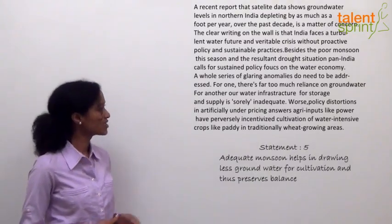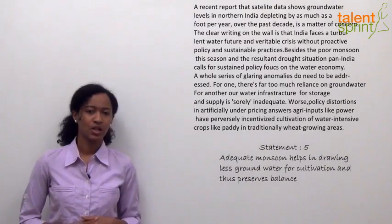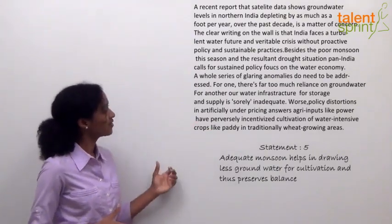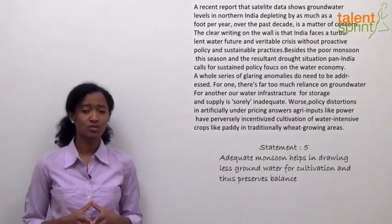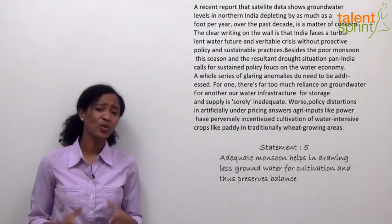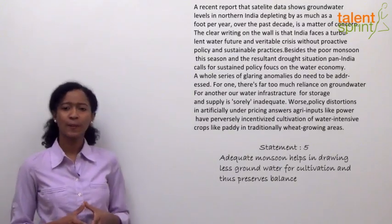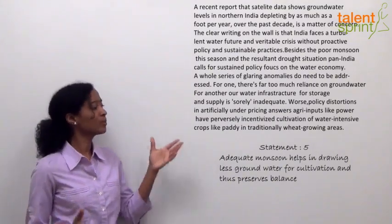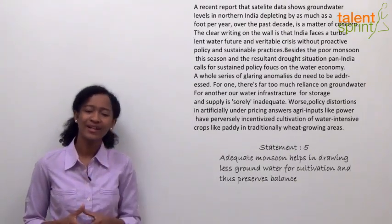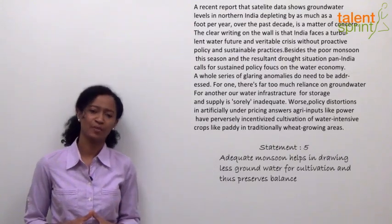Statement 5: 'Adequate monsoon helps in drawing less groundwater for cultivation and thus preserves balance.' The passage says besides the poor monsoon this season and the resultant drought situation, pan-India calls for sustained water policy measures. From this, we can infer that less monsoon means more reliance on groundwater, so adequate monsoon would reduce that reliance. There is partial information supporting this, making it probably true — option 2.